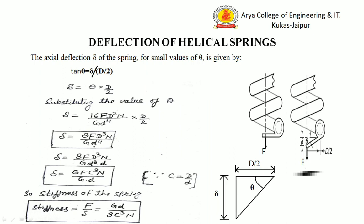This can also be written using the spring index C (where D/d = C): δ = 8FC³N / (Gd). We can also calculate stiffness from this equation. Stiffness k = force per unit deflection = F/δ = Gd / (8C³N). So stiffness k = Gd / (8C³N).